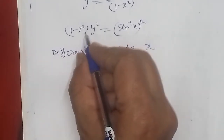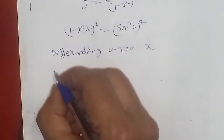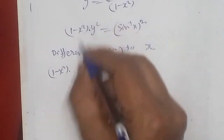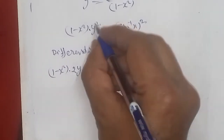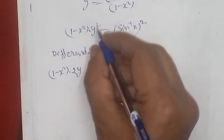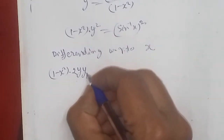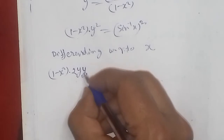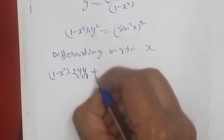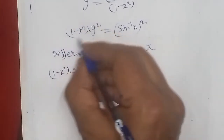There are two functions in multiplication, so we apply the first and second function rule. First function as it is, times differentiation of second. The power comes down and reduces by one. But since it's not just x, we differentiate y again, denoting it y₁, which represents the first derivative of y with respect to x. Plus second function as it is, times differentiation of first.